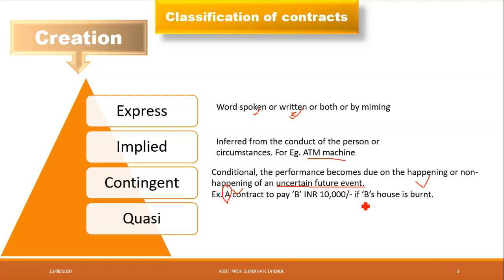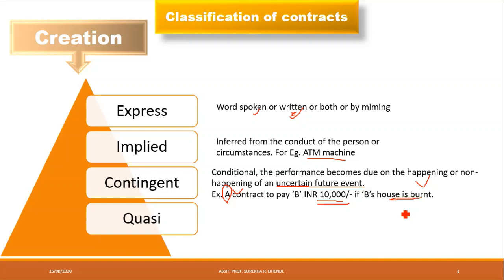Here A is the insurance company, so it is house insurance — general insurance. We pay a premium, but the insurance company will pay the 10,000 only when the house burns. This is an uncertain future event — it may happen (happening) or may not happen (non-happening). This is a contingent contract.